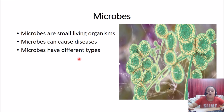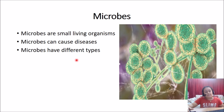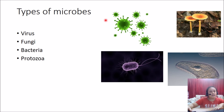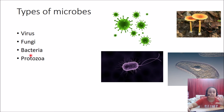Now we've learned all about teeth. Let's go to the second subtopic: microbes. Microbes are small living organisms that can cause diseases. They have different types, and these tiny organisms can only be seen through a microscope. The main types of microbes are virus, fungi, bacteria, and protozoa — though there are even more beyond these main ones.